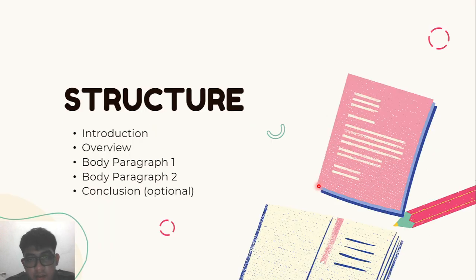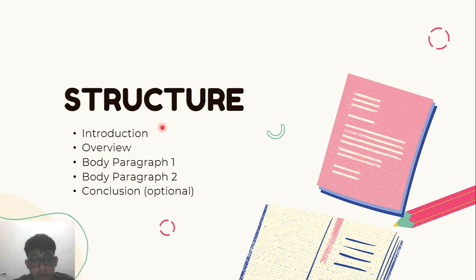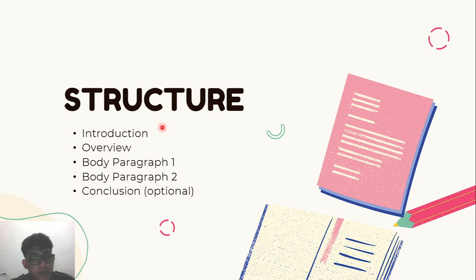Next is about the structure. The first structure is the introduction, where you will explain what the chart is about. The next is the overview, which is like an abstract where you give a description of what you are going to write about. Then there is body paragraph one and body paragraph two. The last structure is the conclusion, but it is optional — you can use it or not.